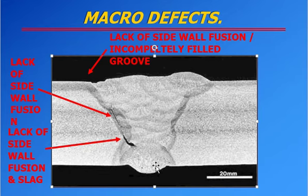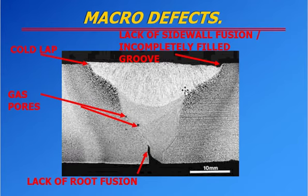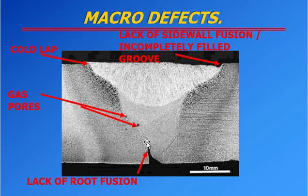Always check the acceptance criteria given to you and measure accordingly to determine if a defect is accepted or rejected. You can also see cold lap, lack of sidewall fusion, incomplete filled groove, and gas porosity. Also look for lack of root fusion — inside the weld root it is not fused properly. You have to check this in the specimen, measure the defect, and record it on your report sheet.